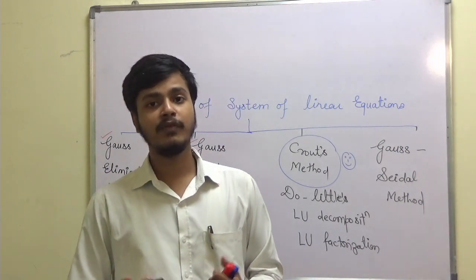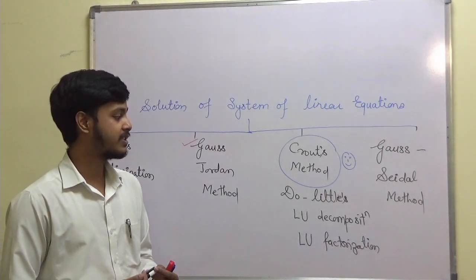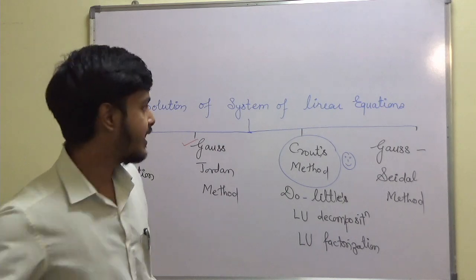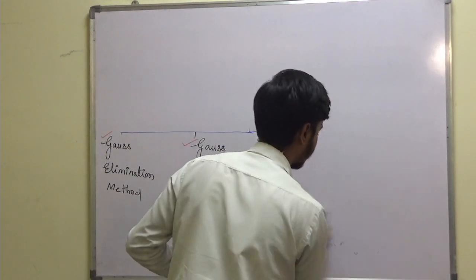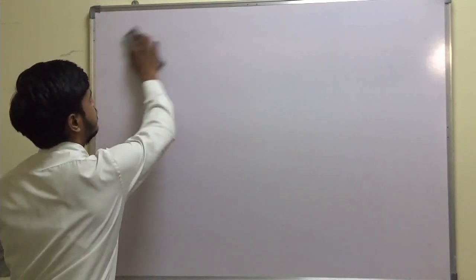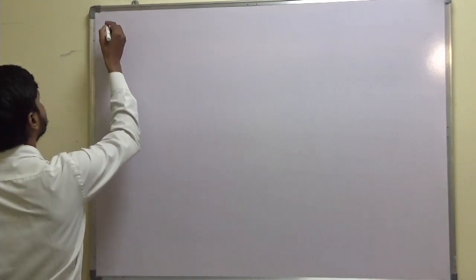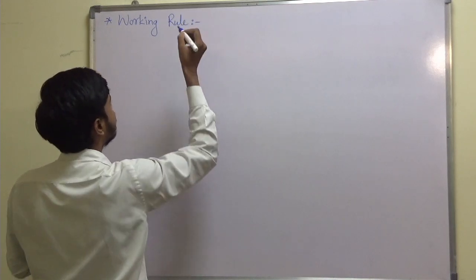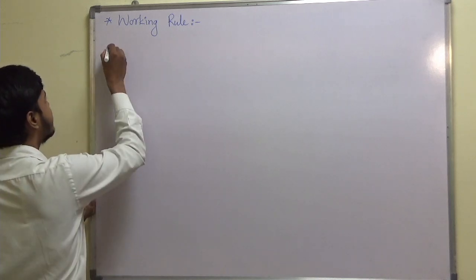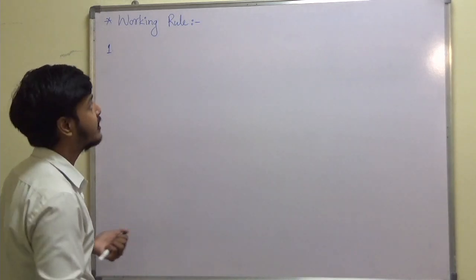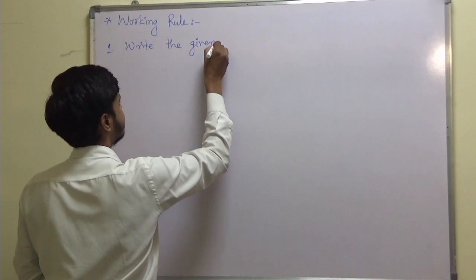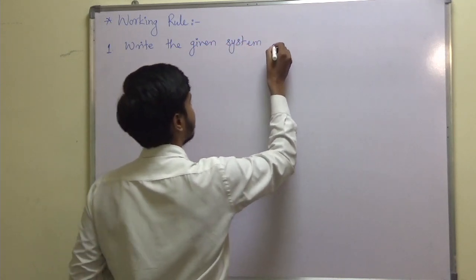Suppose you are having a system of linear equations given to you — then how to find out the solution of those systems of equations by Krauss method. Let us see the working rule of Krauss method. The very first step is: write the given system in matrix form.